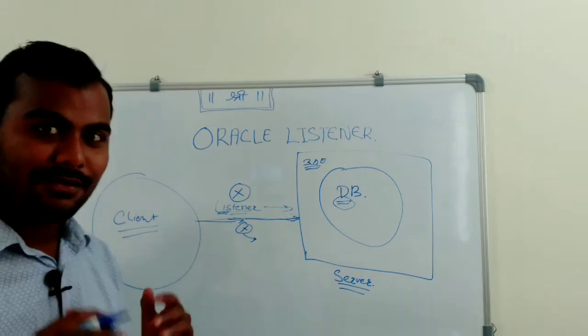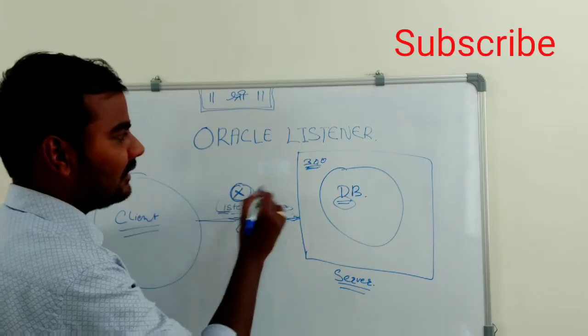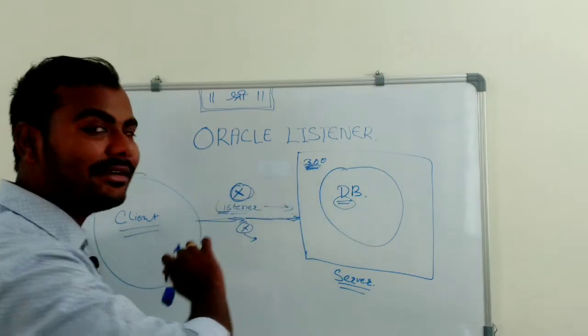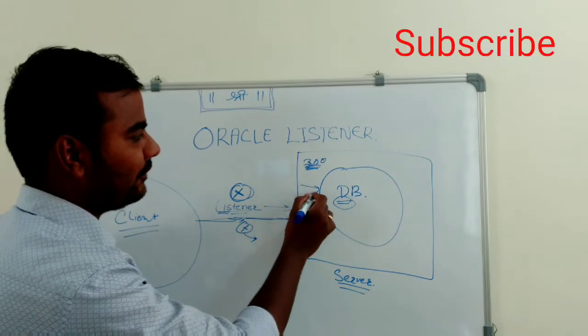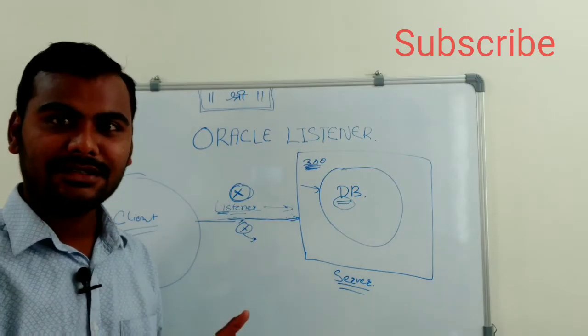So in our situation, what is happening here? Even though if your listener is down, there will not be any problem with these 300 connections which are already connected to your database, because listener which is a server-level service.